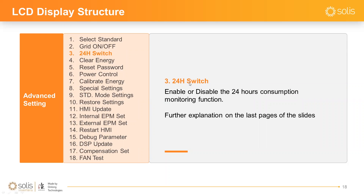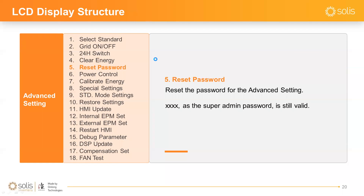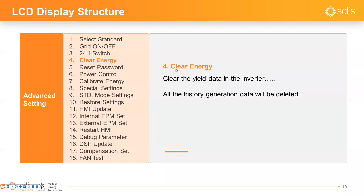The 24H Switch enables or disables the 24-hour consumption monitoring function — more detail is on the last slide. Clear Energy wipes all history generation data from the inverter, so be careful not to press it by mistake. It only clears the generation data on the inverter itself; history data on the monitoring system is not affected unless you connect a new data logging stick.